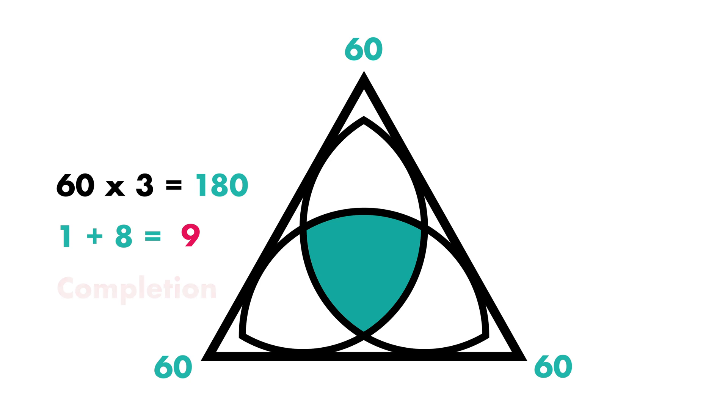And number 9 in numerology is the number of completion. It means the end of a cycle. If we take number 9 and divide it by 3, the corners of the triangle, we get number 3.